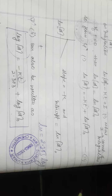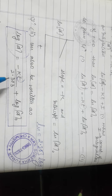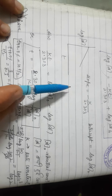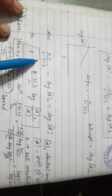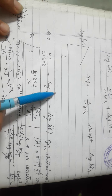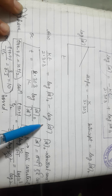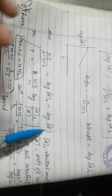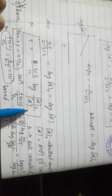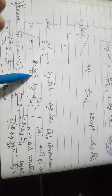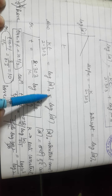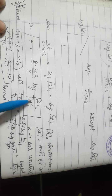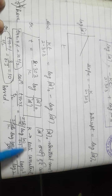Also, rearranging: KT/2.303 = log A₀ − log A = log(A₀/A). Therefore: T = (2.303/K) × log(A₀/A). Here A₀ is initial concentration and A is the remaining concentration at time T. This expression is very important — many numericals are based on it. Rearranging: K = (2.303/T) × log(A₀/A).